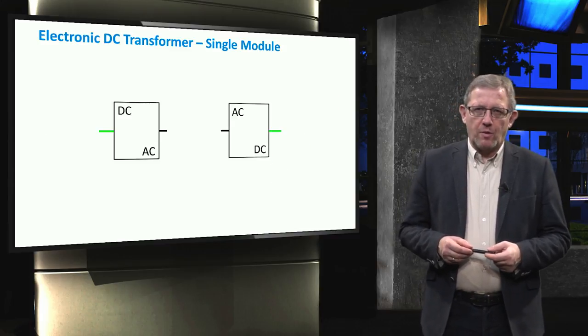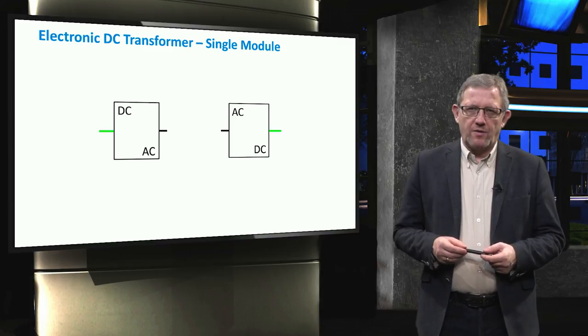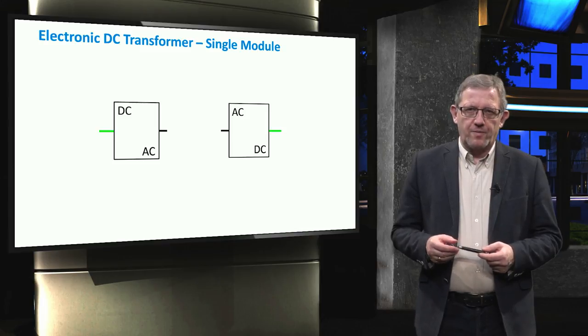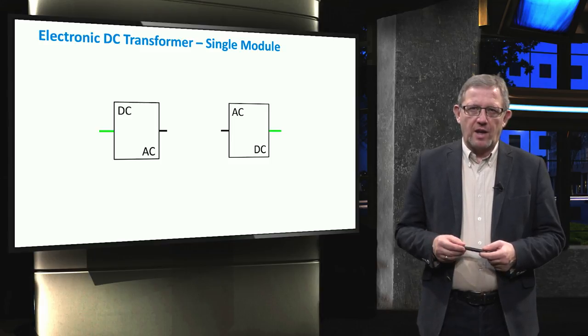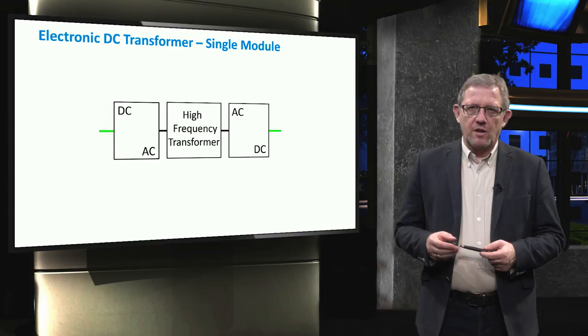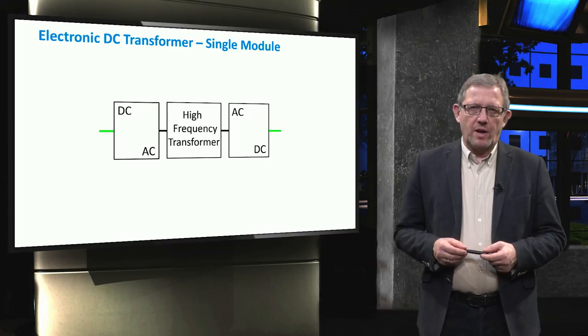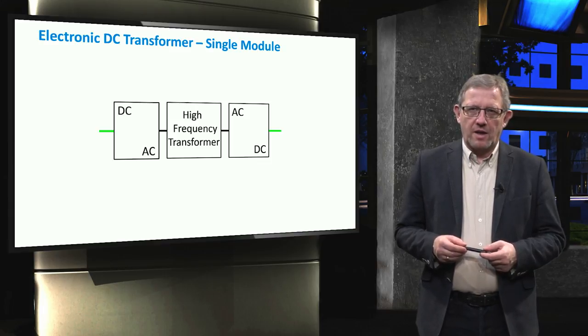First we describe what is an electronic DC transformer. The DC transformer is a device which is used to step up and step down the DC voltages from one level to another. To achieve this, typically the DC is first inverted to AC with a high frequency and then, using a high frequency transformer, the AC voltage is again converted to DC. This way it will be possible to transform the voltage level in large steps.